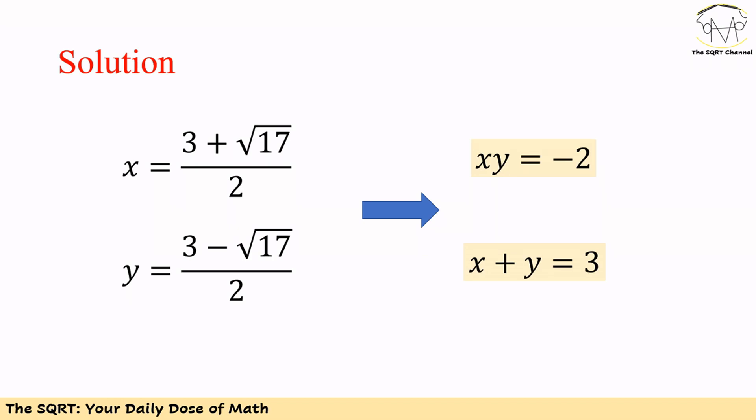To solve this problem we are going to use a new notation. Let's start with using x for (3 plus square root of 17) over 2, and y for (3 minus square root of 17) over 2. We are going to find that x plus y is going to be 3, and x times y is going to be minus 2.